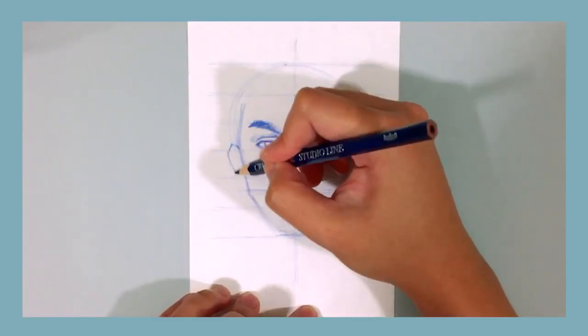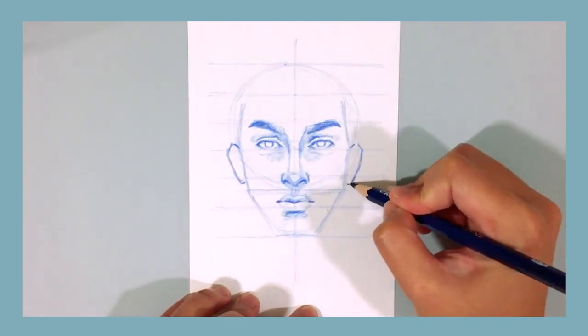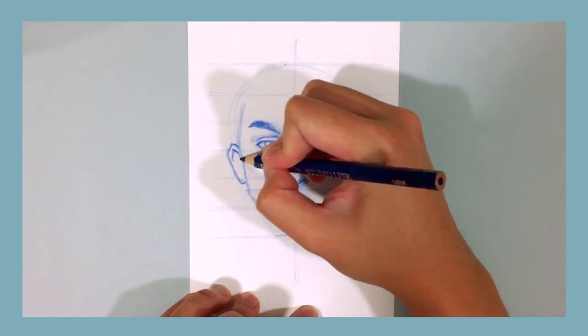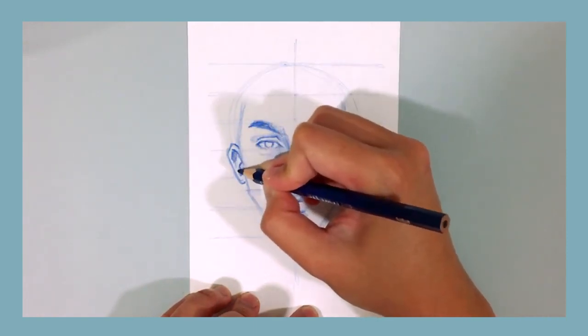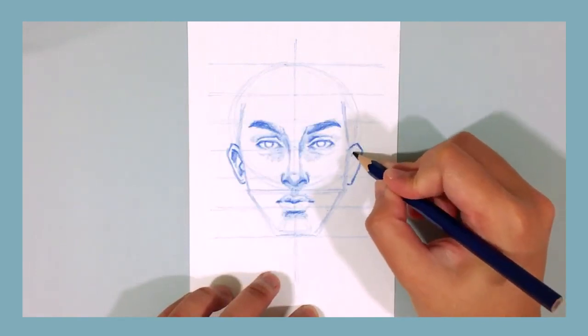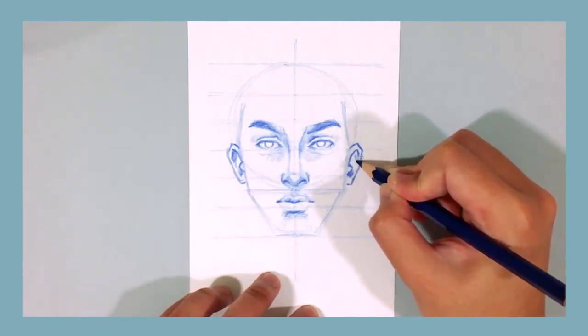But this curve pretty much just simplifies the details of the ear. It only really shows us the helix, the tragus, and the earlobe. However, you are free to add more details to the ear, but for me, I feel like this is enough to represent an ear, so I leave it as simple as this.